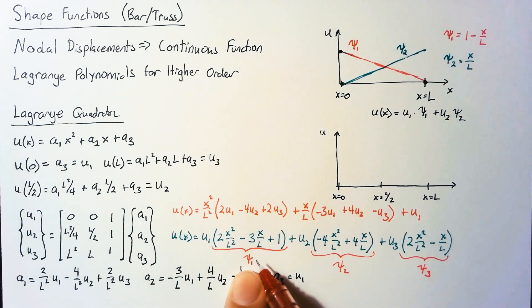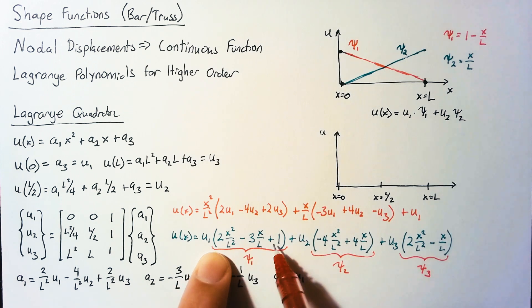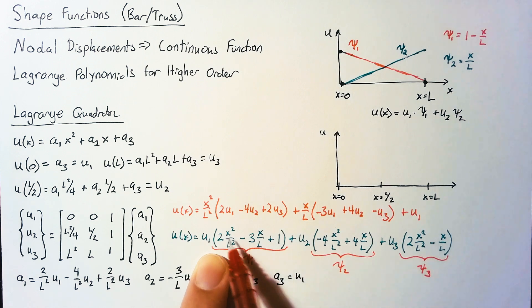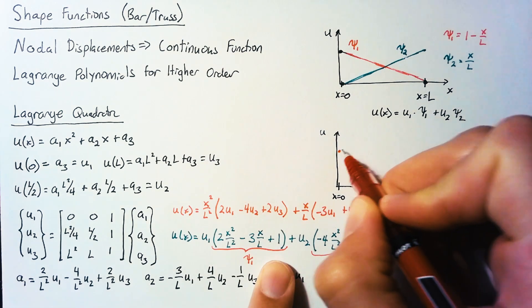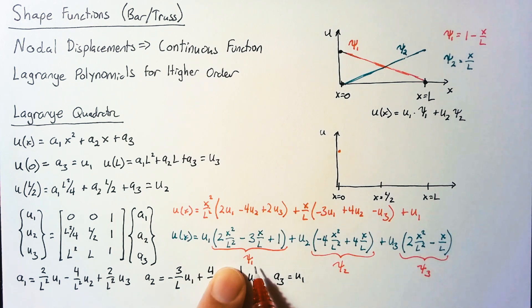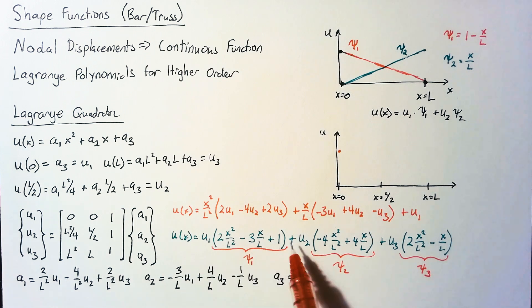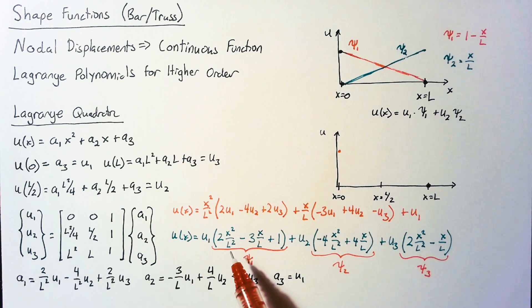The key property of these functions is that they are 1 on the node of question and 0 everywhere else. If we look at psi1 and set x equal to 0, we see very quickly that psi1 of 0 is equal to 1. But then if we look at psi1 of l, x over l becomes 1, so this is 2 minus 3 plus 1, and we get 0 at x equals l. And then finally, we can plug in l over 2, so we get 1 half minus 3 halves plus 1, which ends up at 0 again.